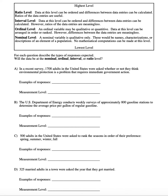The next highest level is ordinal. An ordinal variable may be qualitative or quantitative. Data at this level could be arranged in order or ranked in some way. However, the differences between the data entries are actually meaningless, so calculations with them would not be useful.